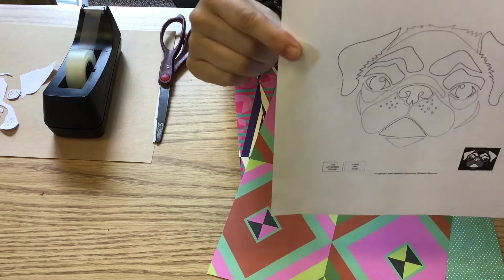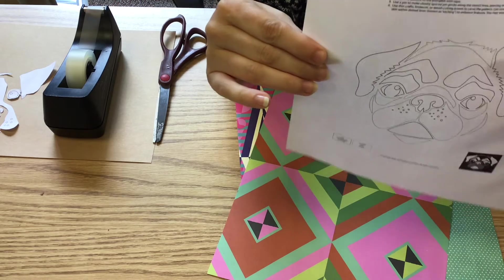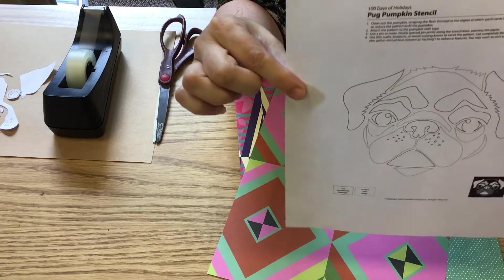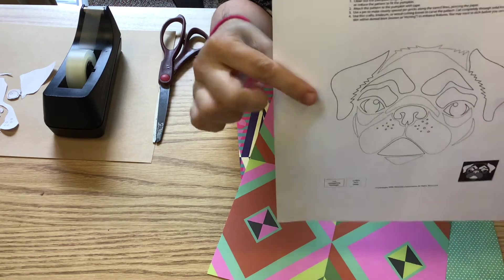So you're going to notice depending on what stencil you pick, there are solid lines and dotted lines. You're going to go ahead and cut out both of those. The reason they're like that is because it's a pumpkin stencil.